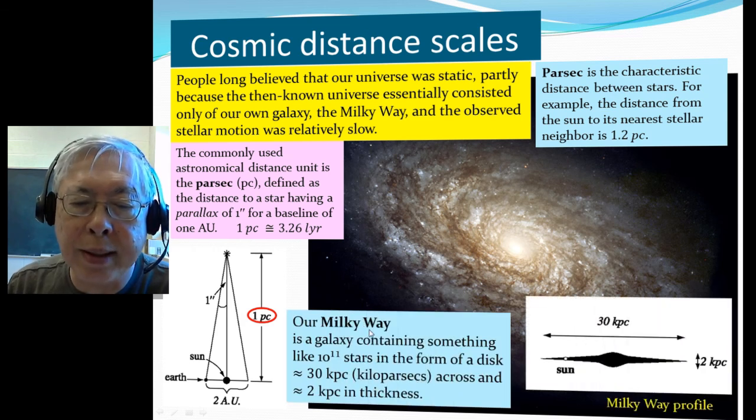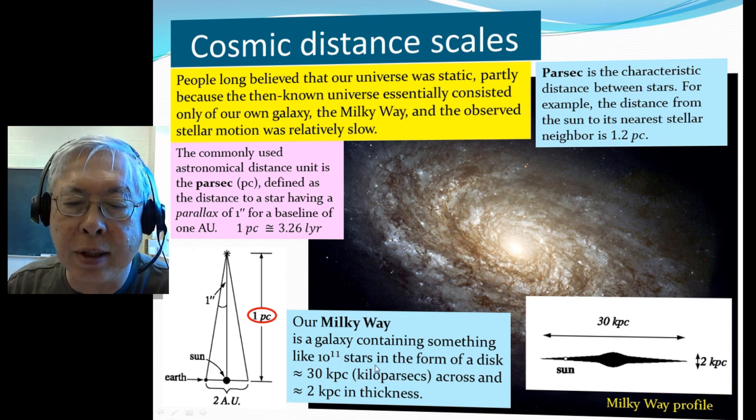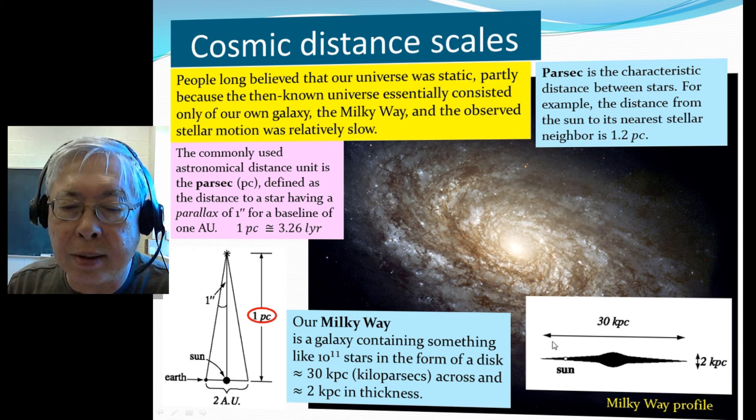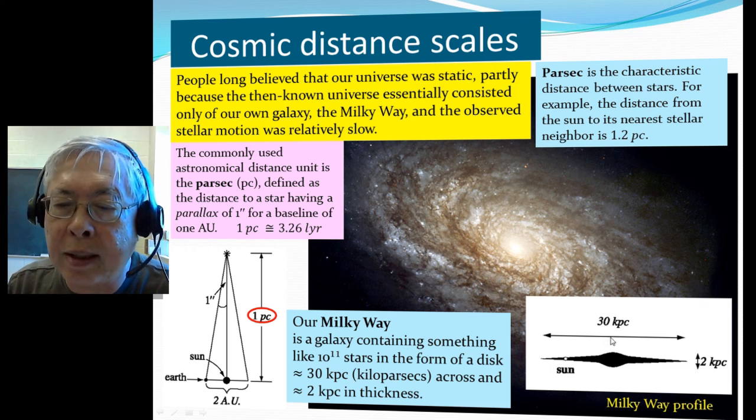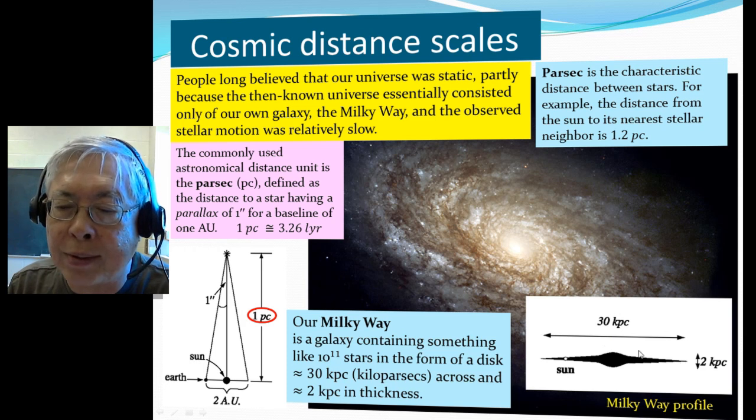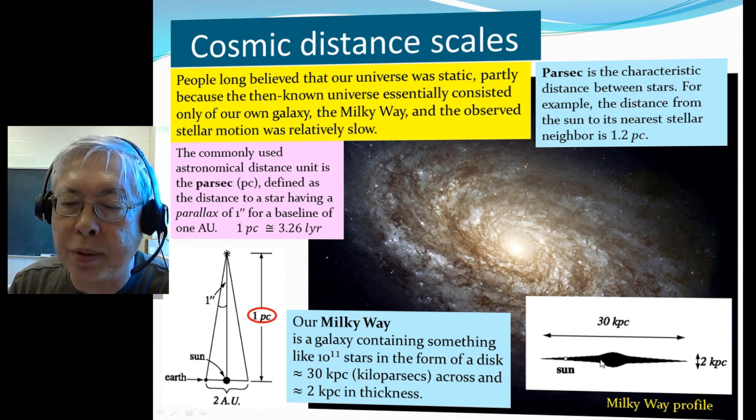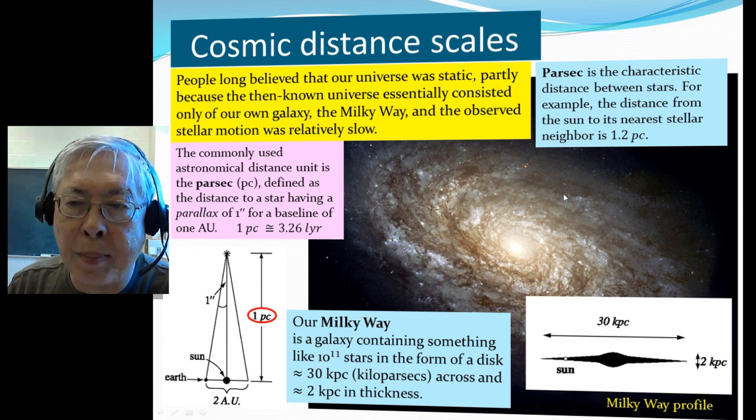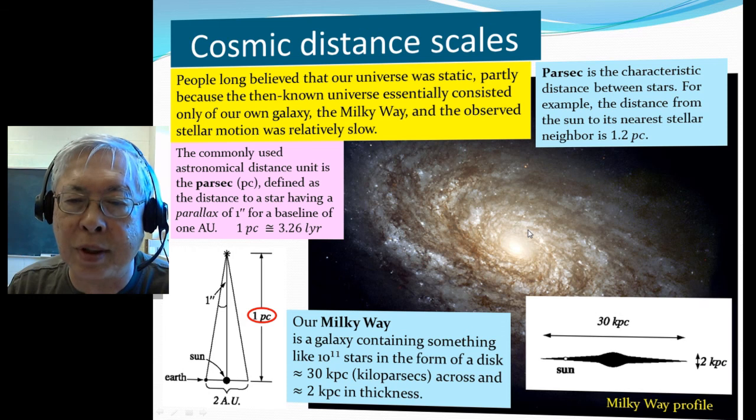And our Milky Way is a galaxy containing something like a hundred billion stars in the form of a disk. It's about 30 kiloparsec across and about 2 kiloparsec thickness, with a bulge. So this gives a sense of what a parsec, kiloparsec, this kind of cosmic distance we're talking about.